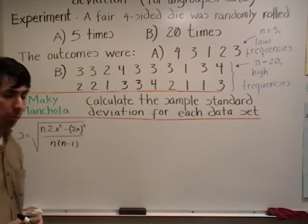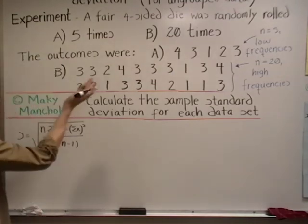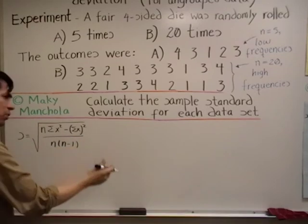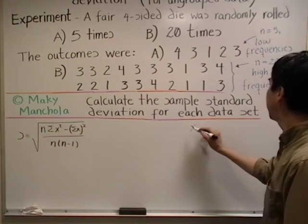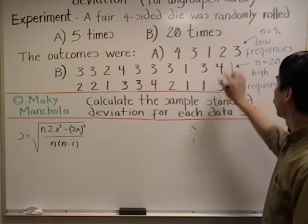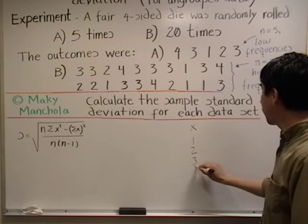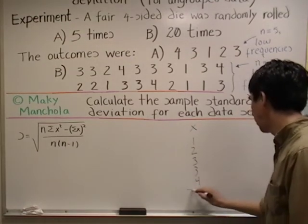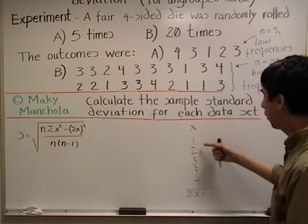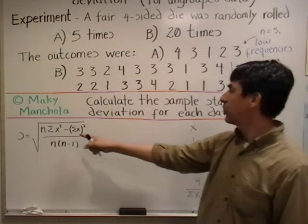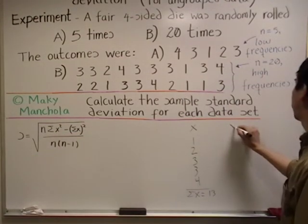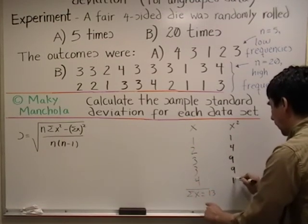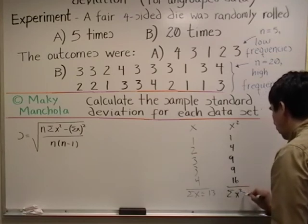I need to obtain the parts of this formula. I need n, which is five. I need the sum of x squared and the sum of x. Let me list my data values: 1, 2, 3, 3, and 4. The sum of x is 13. For x squared: 1 squared is 1, 2 squared is 4, 3 squared is 9, 3 squared is 9, 4 squared is 16. When you add those, the sum of x squared turns out to be 39.